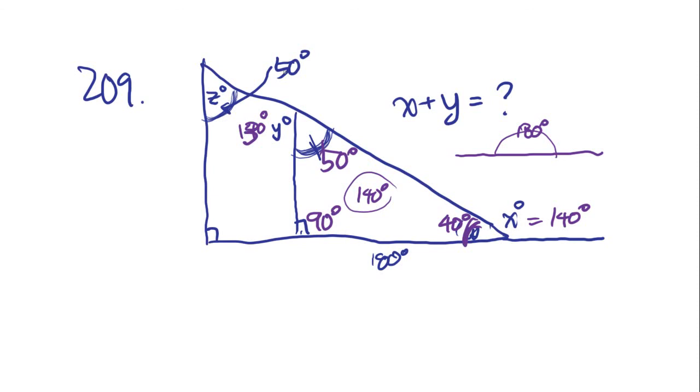Z, they gave us as 50. So, we figured out what Y is and we figured out what X is. They're asking what X plus Y is. So, they're asking what 140 plus 130 is. That's going to be 270. 270 is answer D.